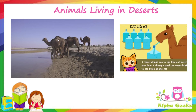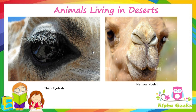Camels can drink up to 200 liters of water at a time when water is available, storing it in their bloodstream. Camels have long eyelashes and hairs that prevent sand from entering their eyes during sandstorms, and their thin narrow nostrils can close to block out sand.